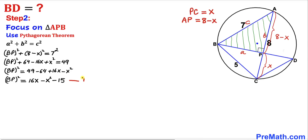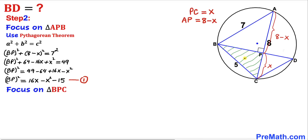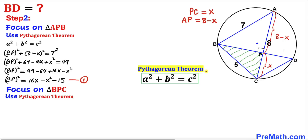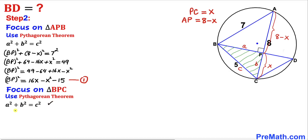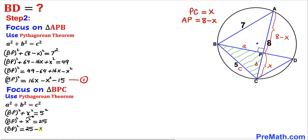Now let's focus on the other triangle BPC. We know this is a right triangle as well, so we apply the Pythagorean theorem again. Filling in: BP² + X² = 5². Moving X² to the right-hand side gives BP² = 25 − X². Let's call this equation number 2.